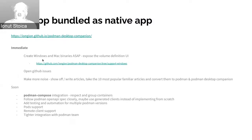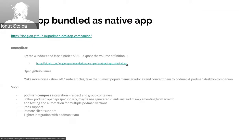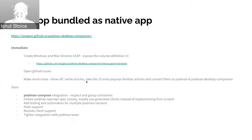The immediate goals I have are to expose what is most demanded: Windows and Mac binaries. This is my main focus right now. I have a branch started in the project called 'Support Windows' but it's really about Windows and Mac. After that I will open the GitHub issues — there were so many so far that it would have only polluted the entire GitHub with just those two things. Then the plan is to make more noise, publish about the project in more places, write some articles with the most useful scenarios that developers are looking for, and convert them to Podman and Podman specifics.